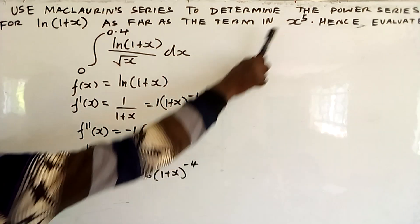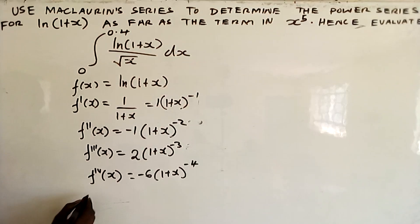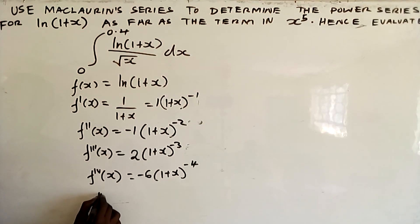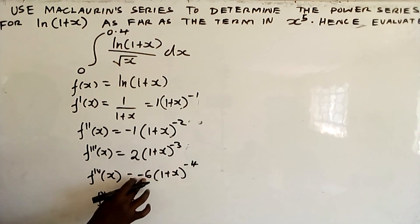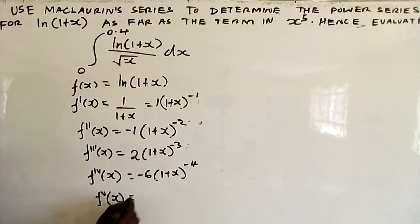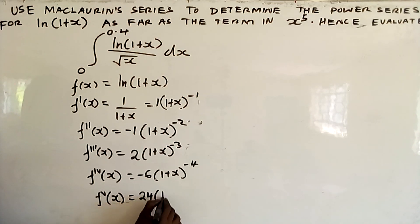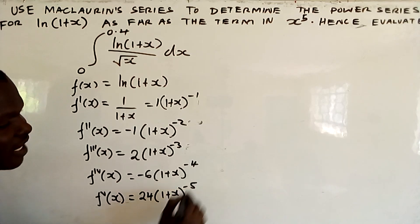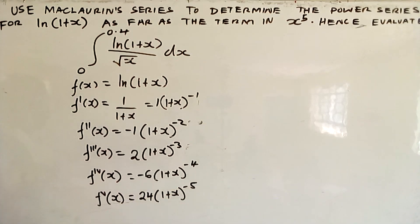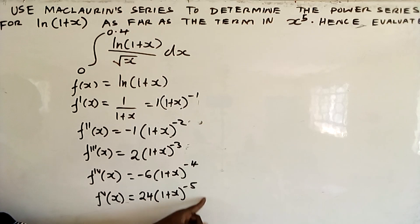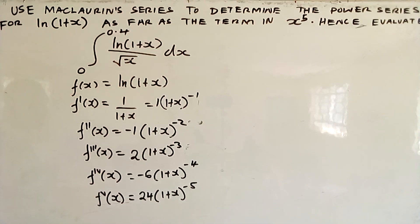Differentiating for the fifth time to get x raised to power 5: negative 4 times negative 6 gives 24. Then (1+x) with the power reduced by 1 becomes negative 5. Differentiating the inner function gives 1, so it stays that way.